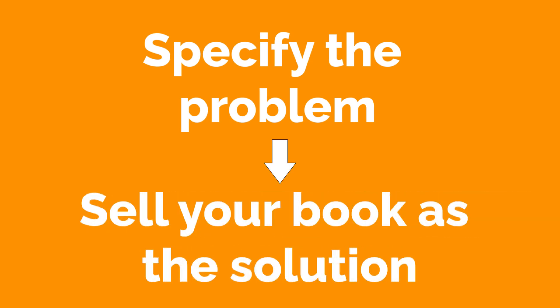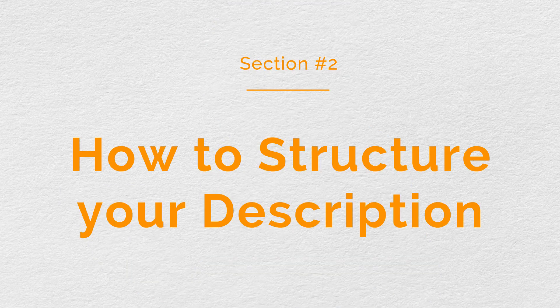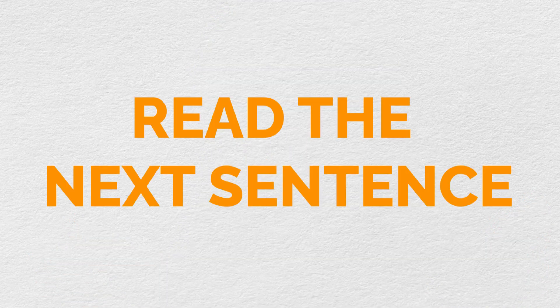So remember, when you're writing your book description, don't just sell your book — specify the problem and then sell your book as a solution. Now that you know what you need to talk about, you need to understand exactly how to structure your book description. There are four main parts to this. First, you have your hook. This is the most important part of your description and it has only one purpose — to get you to read the next sentence.